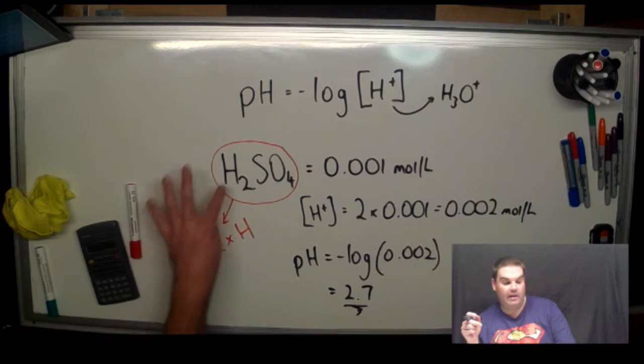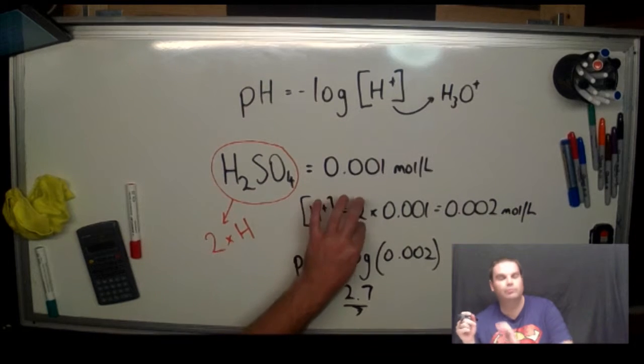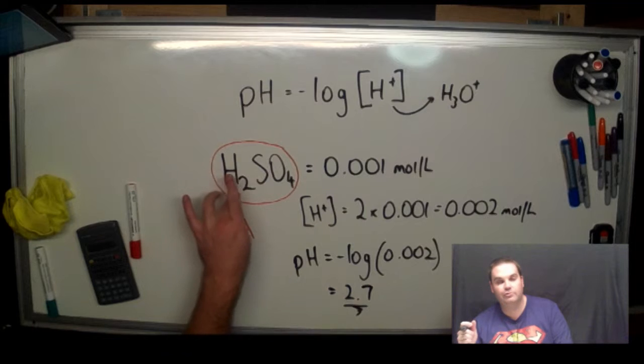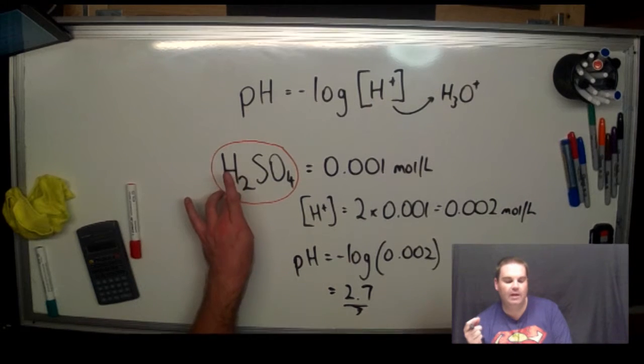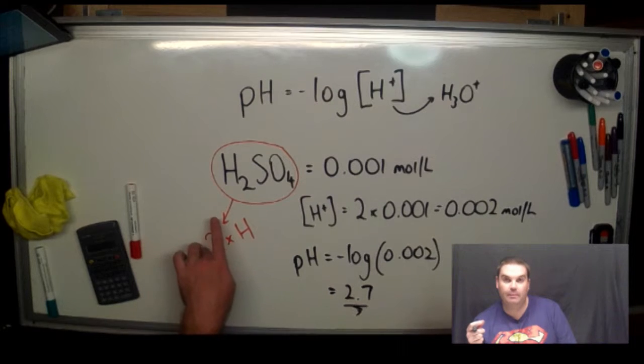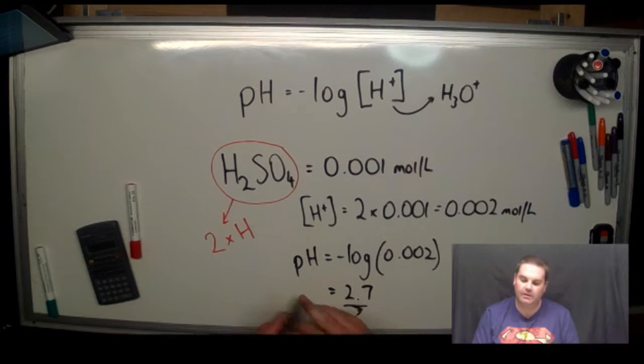If we had H3, that would be three hydrogens, and we would triple it. So you've just got to take into account how many hydrogens are in one molecule, and then you need to multiply the concentration by the number of hydrogen atoms you've got in there.